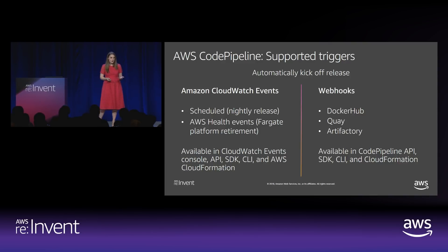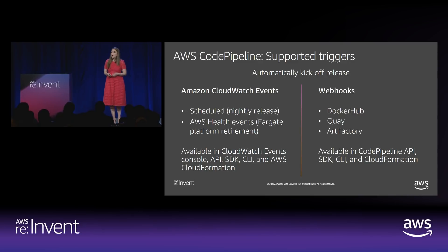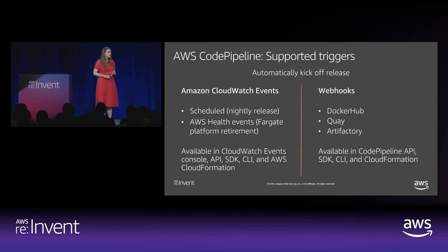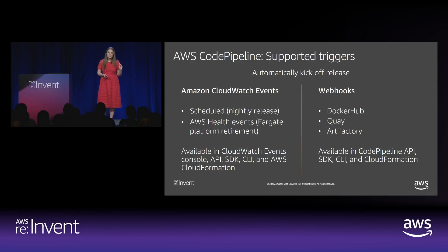There are other inputs into our release process besides source code and Docker images in ECR. CodePipeline has a couple of options for triggering on these other inputs automatically. One is Amazon CloudWatch Events — any CloudWatch event can trigger a pipeline. You can do a nightly release with a scheduled cron job, or pay attention to AWS Health events notifying you about Fargate platform retirements. For third-party services, CodePipeline supports webhooks — services like Docker Hub, Quay, and Artifactory. If you've got a Docker image in Docker Hub or libraries in Artifactory, you can get a webhook URL from CodePipeline and plug it into any of these third parties to automatically trigger your pipeline.